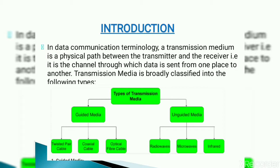There are two types of transmission media: guided media and unguided media. In guided media there will be twisted pair cable, coaxial cable, and optical fiber cable. In unguided media there will be radio waves, microwaves, and infrared rays.